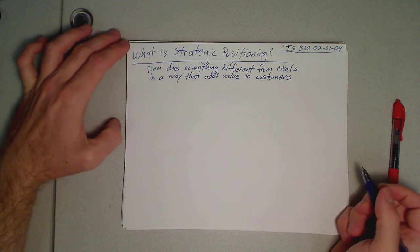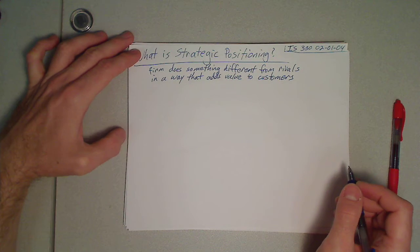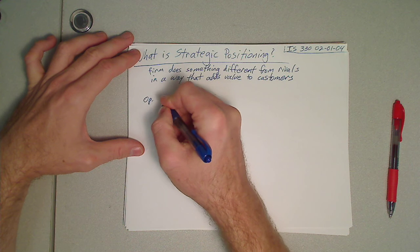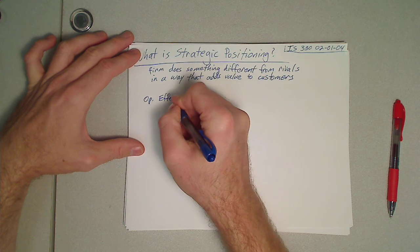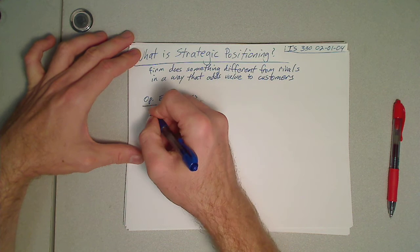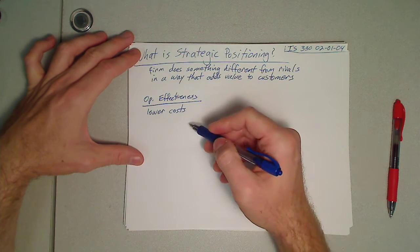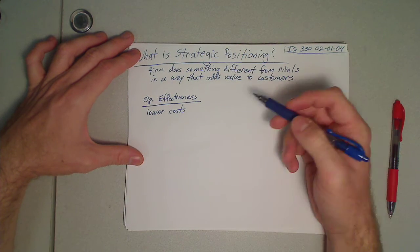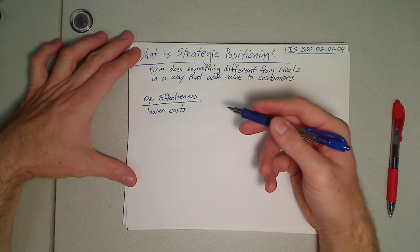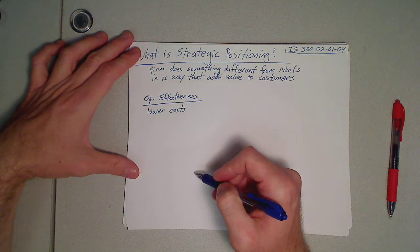So the idea is operational effectiveness was about basically lowering costs. You can increase your profits by lowering your costs. We can automate, we can do things faster, we can improve the quality, lower the number of defects, all the stuff that we focus on in operations.